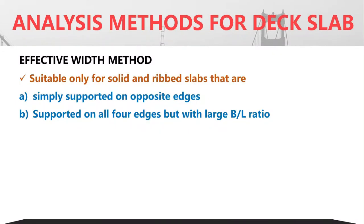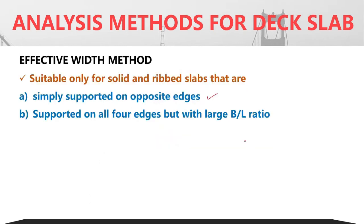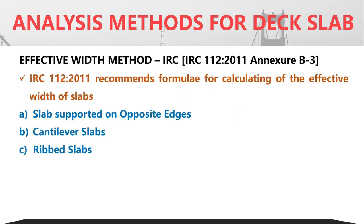The effective width method is suitable for two cases. One is a simply supported slab supported on two edges. It can also be used for slabs — either solid or ribbed — that are supported on all four edges, but where the B by L ratio is large, meaning the slab acts almost as a one-way slab. As per IRC 112:2011, Annexure B3, the formula for calculating the effective width of slab is given for three separate conditions: slab supported on opposite edges, cantilever slabs, and ribbed slabs.